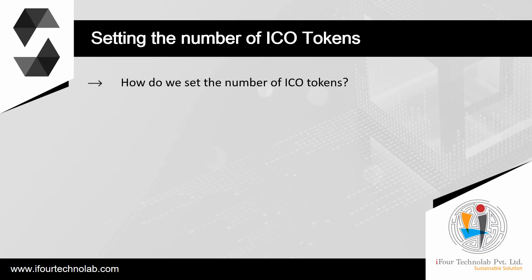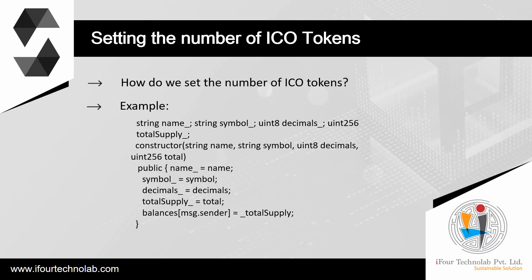ICO tokens — how do we set the number of ICO tokens? There are several ways to set the maximum number of ICO tokens, and this matter might be worth a lengthy discussion by itself. For the needs of our ERC20 tutorial, we shall use the simplest approach: set the total amount of ICO tokens at contract creation time and initially assign all of them to the contract owner — that is, the account that deployed the smart contract.